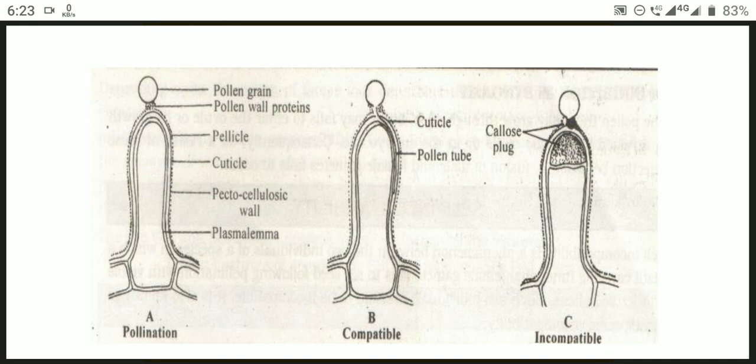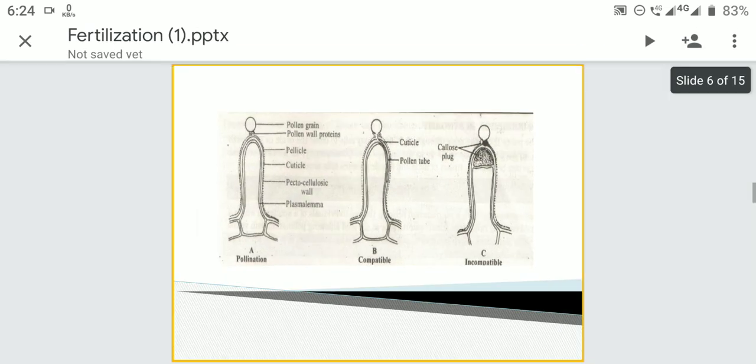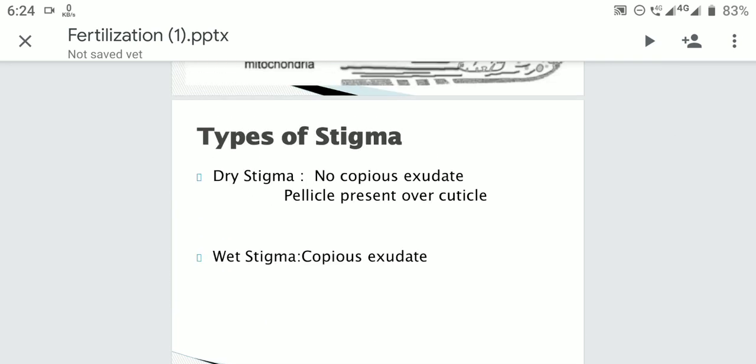Cutinase hydrolyzes the cuticle of dry stigma, and the pollen tube penetrates the stigma. In wet stigma, the cuticle is already ruptured during deposition of exudate. The pollen tube then grows into the style by absorbing nutrients from the stylar canal. Dry stigma is present in most plants — for example, cotton — while wet stigma is limited to plants such as Solanum nigrum, Nicotiana, and Petunia.